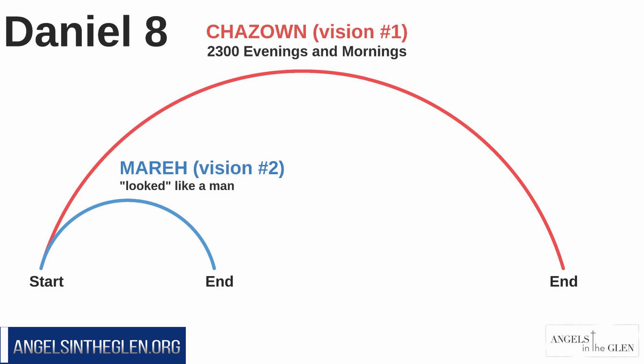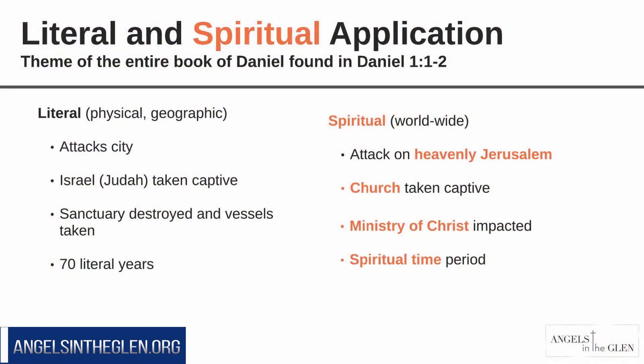The other thing we're going to cover in this study is we're going to identify the Antichrist and how it subverted the ministry of Jesus Christ and took God's people captive, because we're building off of the framework of the theme of Daniel. Just as King Nebuchadnezzar took God's people captive and attacked the city — the literal, physical, geographical city in Jerusalem — and takes God's people captive, destroys the sanctuary, and the vessels are taken into captivity for 70 years, literal years.